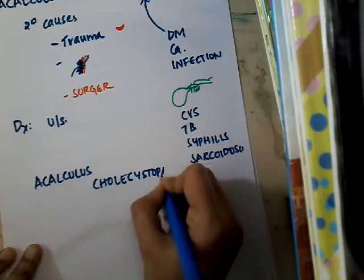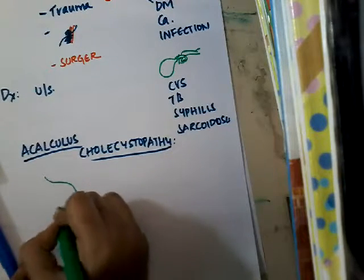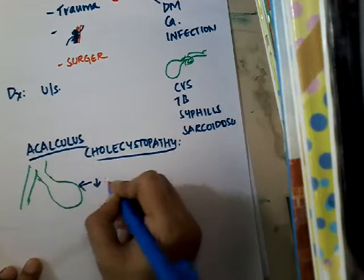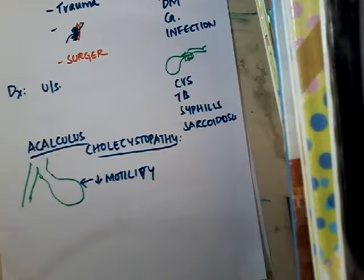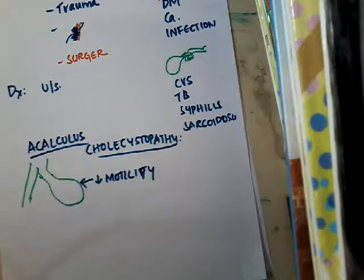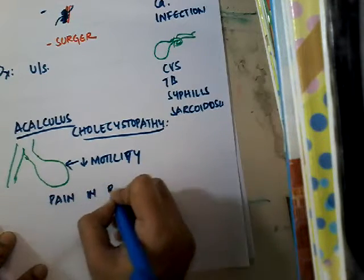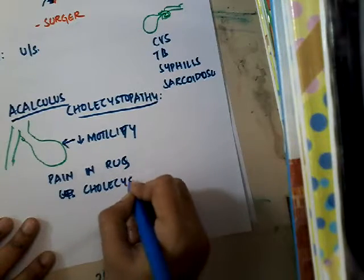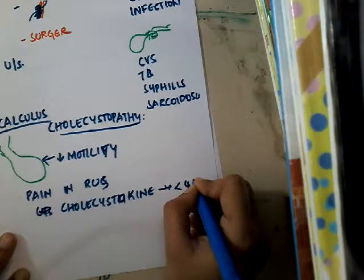In acalculous cholecystopathy, there are no stones, but the motility of the gallbladder is disordered — decreased motility. This causes recurrent biliary pain in patients with or without gallstones. The patient has right upper quadrant pain. Cholecystokinin levels are measured; when you do a cholecystokinin cholescintigraphy test, it shows that the gallbladder ejection fraction is more or less than 40%.